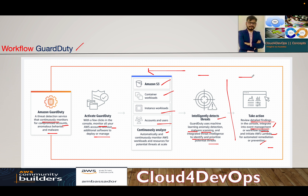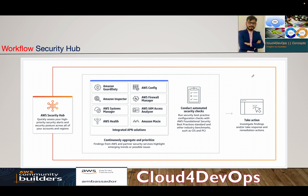Let's move ahead to Security Hub. Security Hub is a centralized hub that integrates with different security tools: GuardDuty, Inspector, Systems Manager, AWS Health, Macie, IAM Access Analyzer, Firewall Manager, and AWS Config, as well as integrated APN solutions. It lets you quickly assess high-priority security alerts and your security posture across all AWS accounts and regions, continuously aggregating and prioritizing findings.